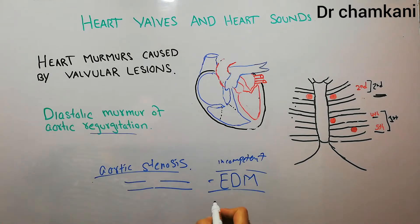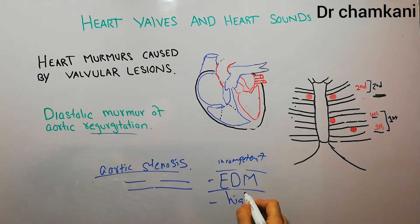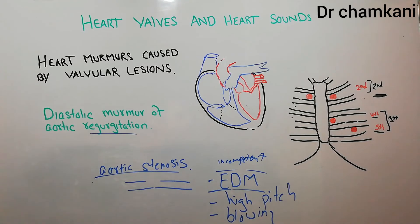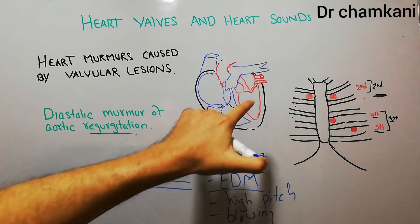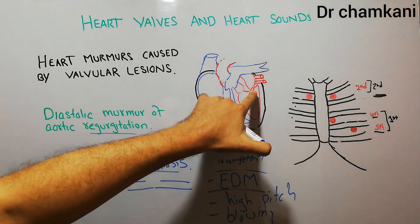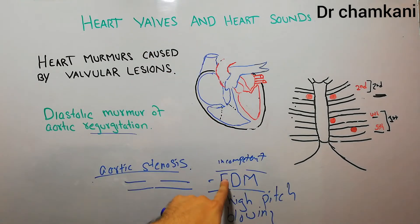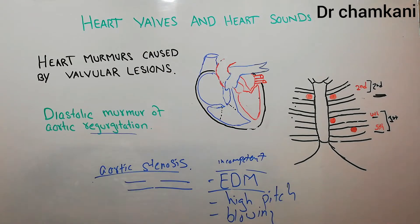This murmur is very high pitched and also blowing in quality. Next time when we discuss the murmur of mitral regurgitation, we will see that the murmur of mitral regurgitation is also high pitched and blowing, but that will not be an early diastolic murmur — rather it will be a mid-diastolic murmur.